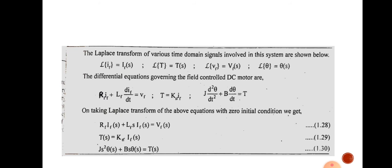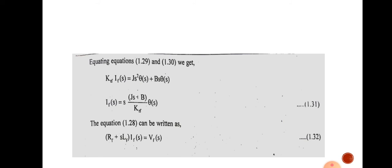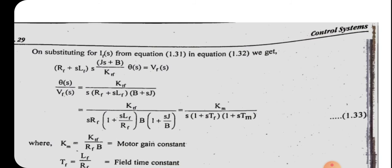From Equation 1.28, taking If(S) outside: If(S)·(Rf + S·Lf) = Vf(S). This is Equation 1.32. Substituting the value of If(S) from Equation 1.31 into Equation 1.32, we get: (Rf + S·Lf)·[S·(JS + B) / KTF]·θ(S) = Vf(S). This equation contains θ(S) as output and Vf(S) as input.